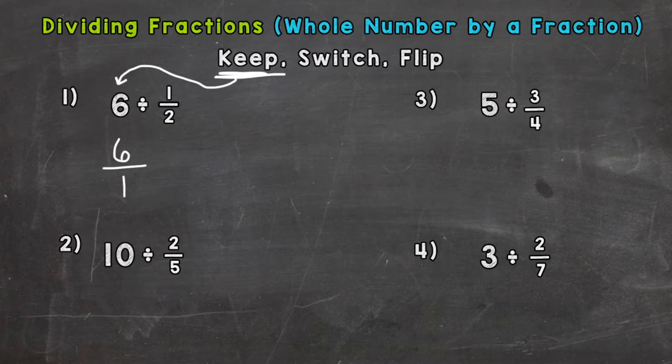but we now have a numerator and a denominator. So our second step is Switch. We need to switch to the opposite of division. Switch our division sign to a multiplication sign. And lastly, we Flip. So we flip the second fraction in the problem. So the 2 is now the top number, the numerator, and the 1 is now the denominator.